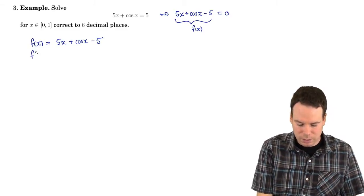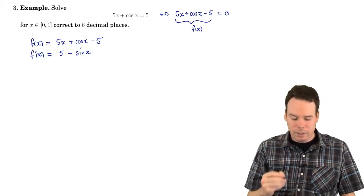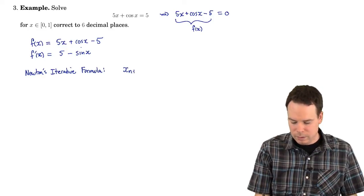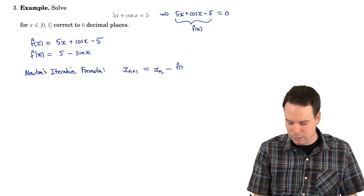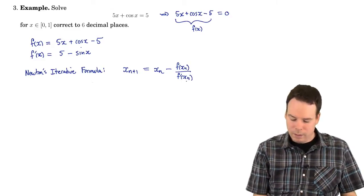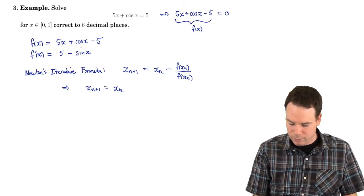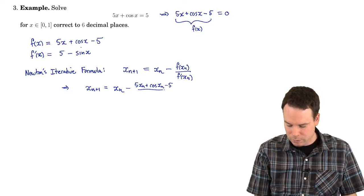Newton's method says we're going to need to use the derivative. So f'(x) is 5 minus sin(x). We need to work out the Newton iterative formula: the next approximation is obtained from the previous one by taking the previous one minus the function value over the derivative at the previous one. In this case, x_{n+1} = x_n minus (5x_n plus cos(x_n) minus 5) all over (5 minus sin(x_n)).